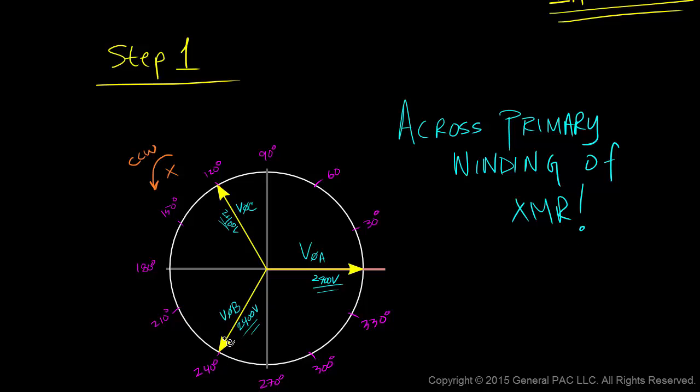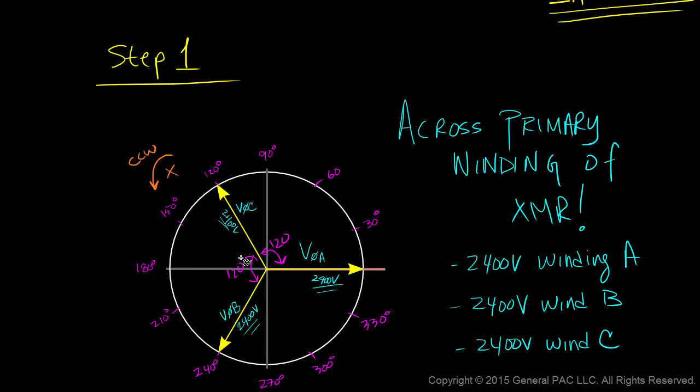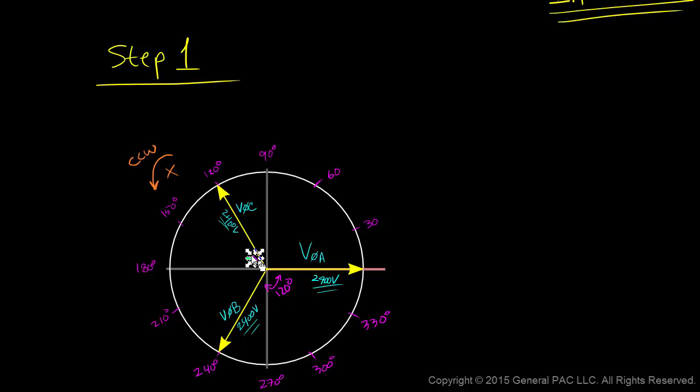So we're assuming that we'll have 2400 volts across winding A on the primary side, 2400 volts across winding B on the primary side, and 2400 volts across winding C on the primary side. And all three voltages are displaced by 120 degrees.